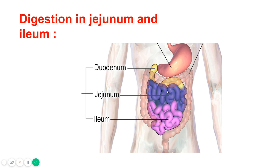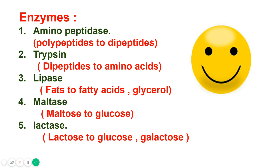These intestinal enzymes are aminopeptidase, trypsin, lipase, maltase, and lactase. Aminopeptidase acts on polypeptides and forms dipeptides — that is, bigger molecules are converted to smaller molecules. Trypsin then converts dipeptides to amino acids, which are the smallest units of proteins.